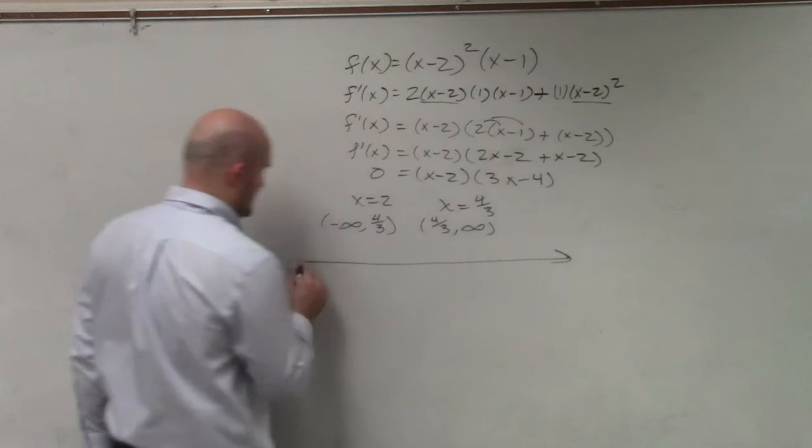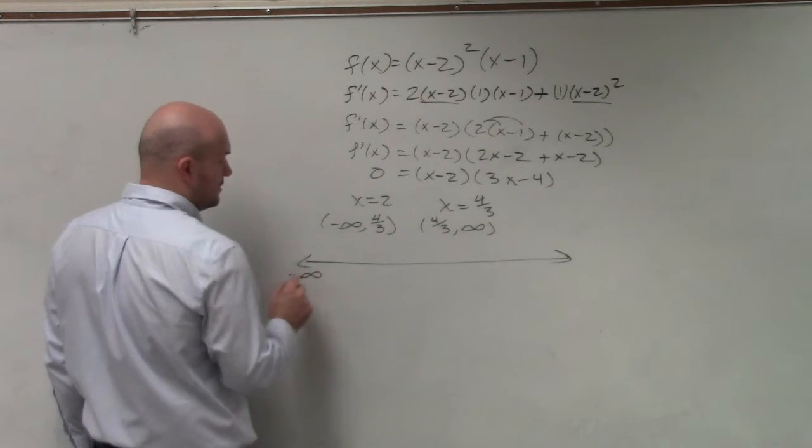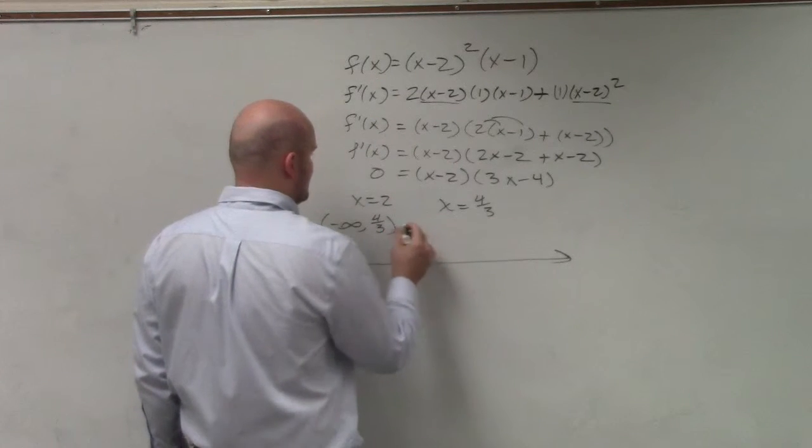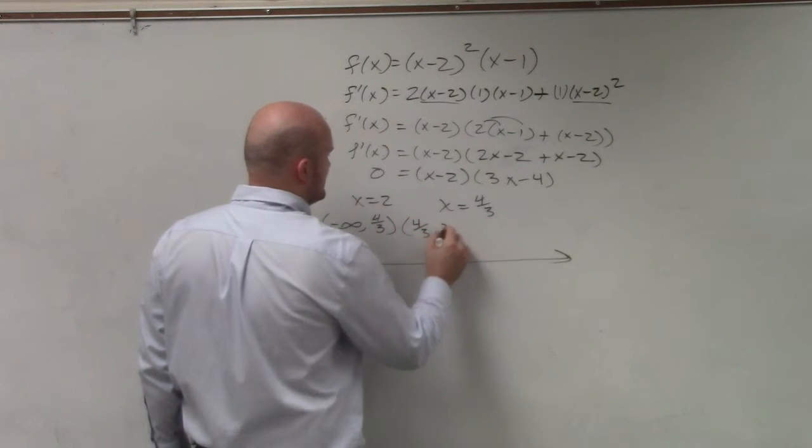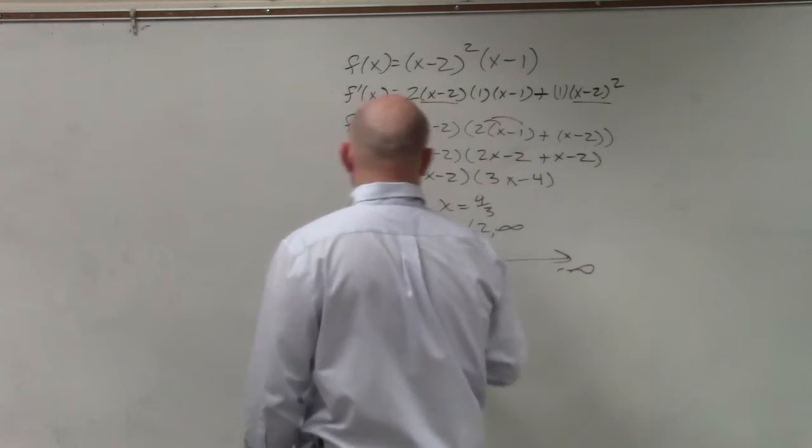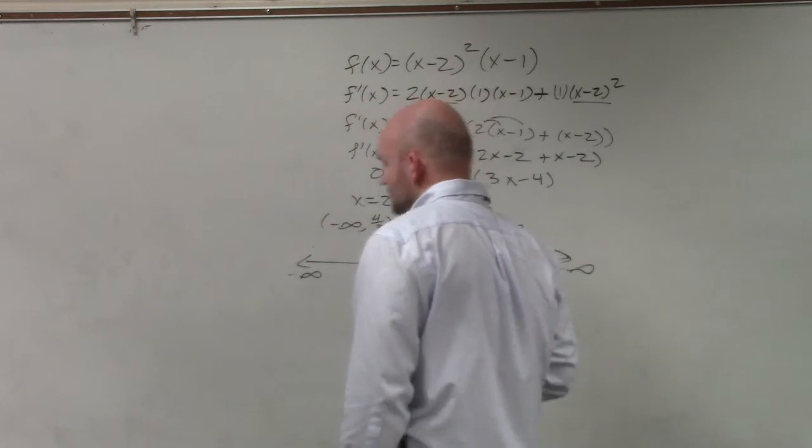OK, I'm just going to use a number line for this one, just to make it simple. So we have 4/3 to 2, and then 2 to infinity. So we'll just say 4/3 is going to be right here, and we'll say 2 is right there.